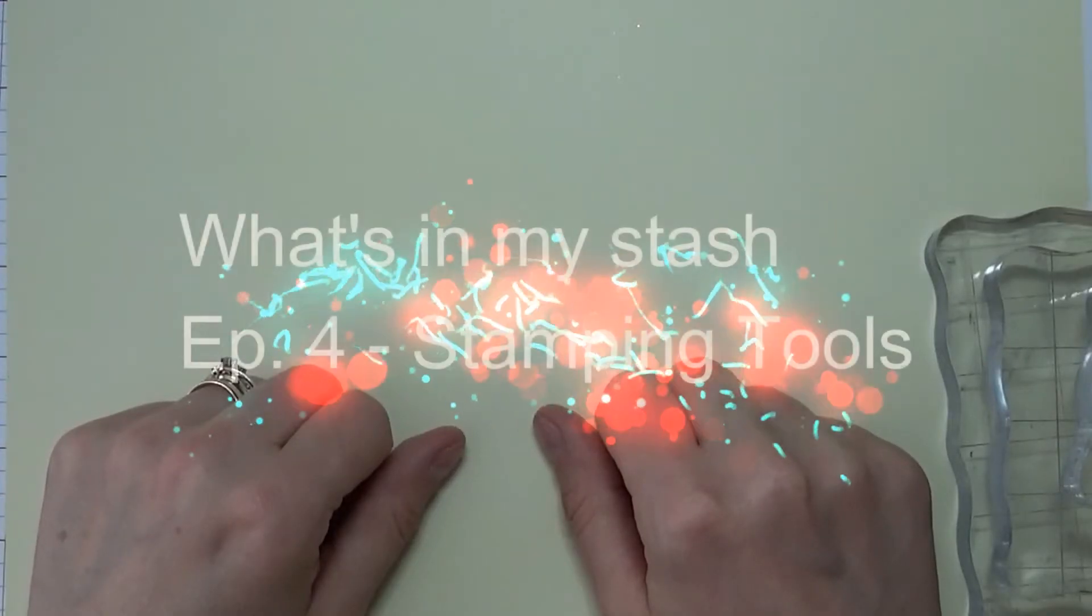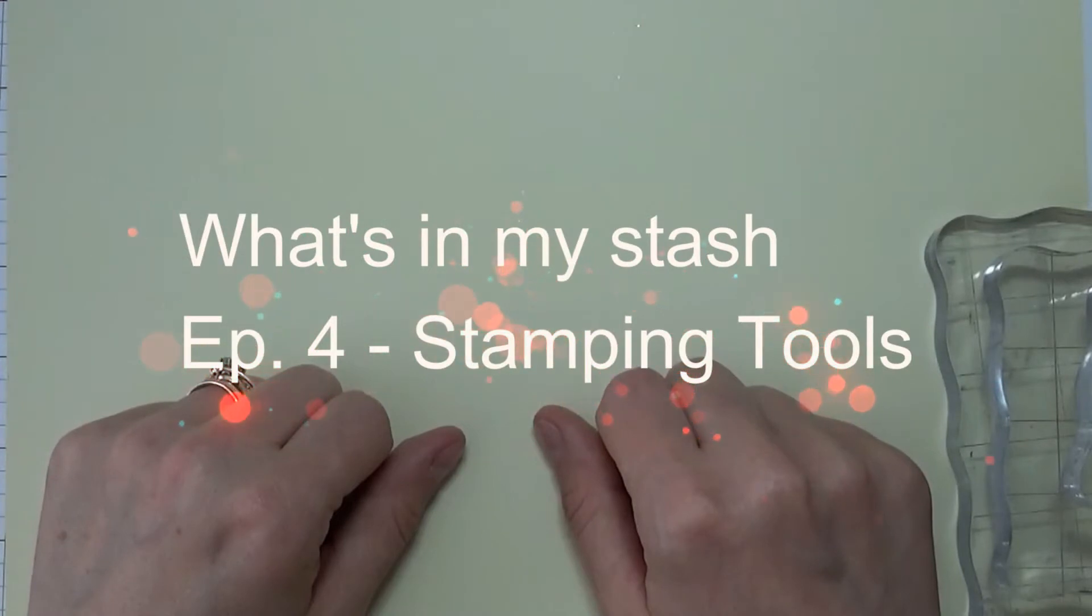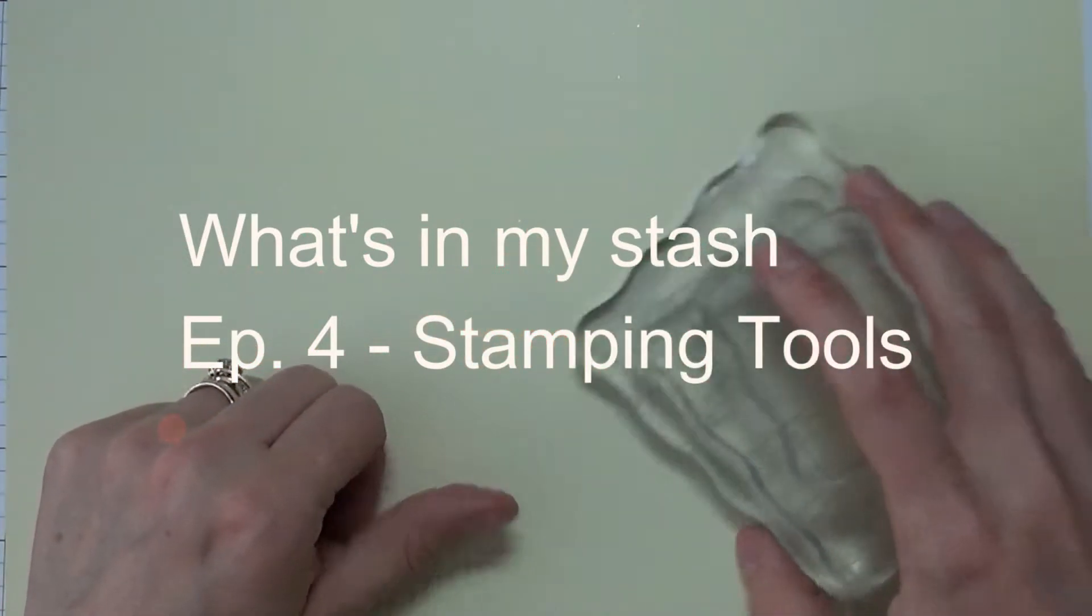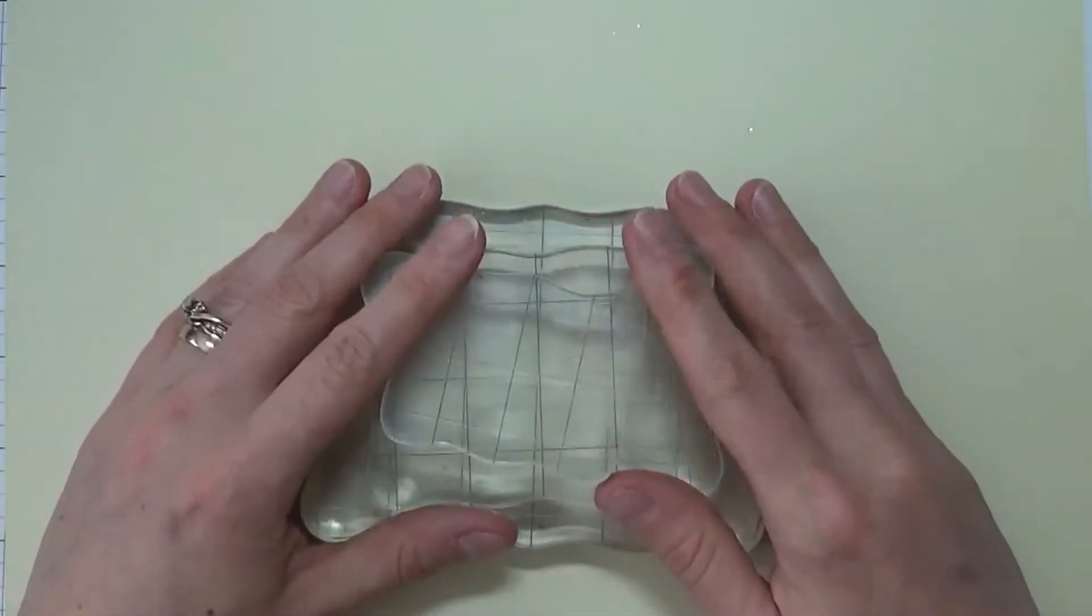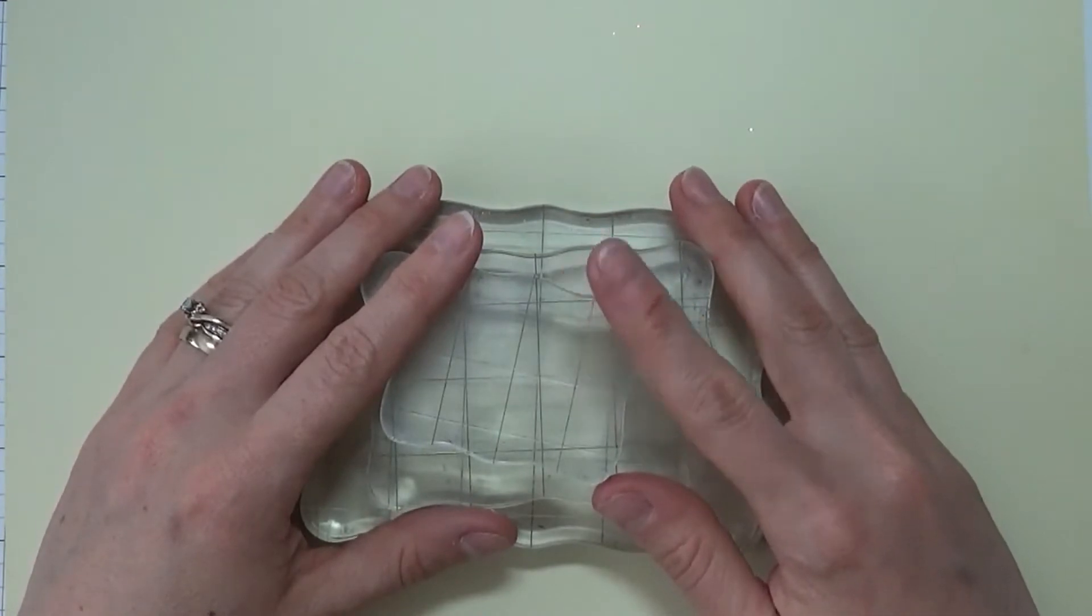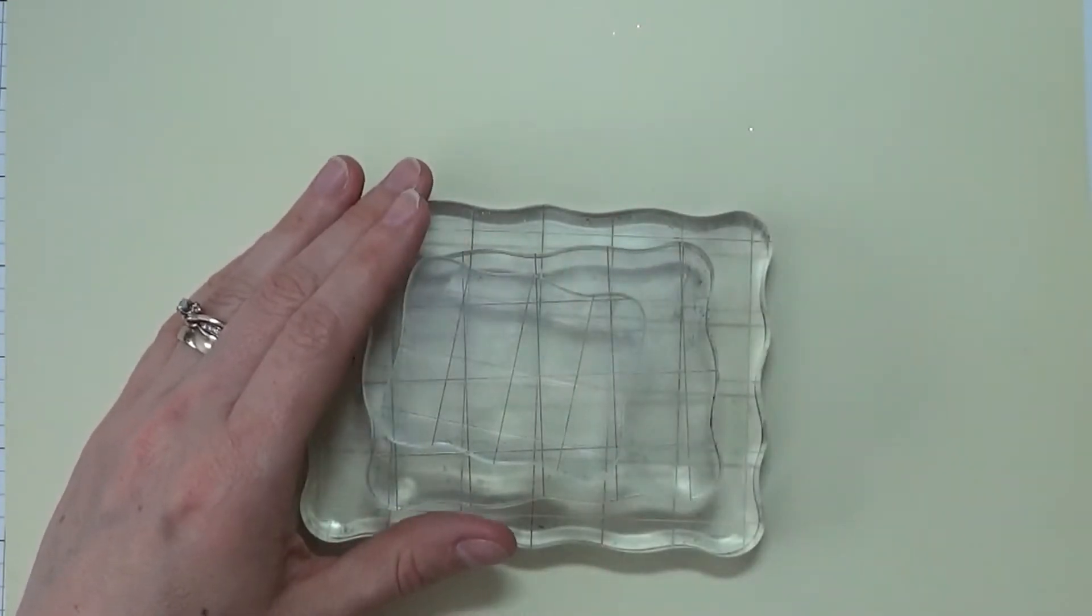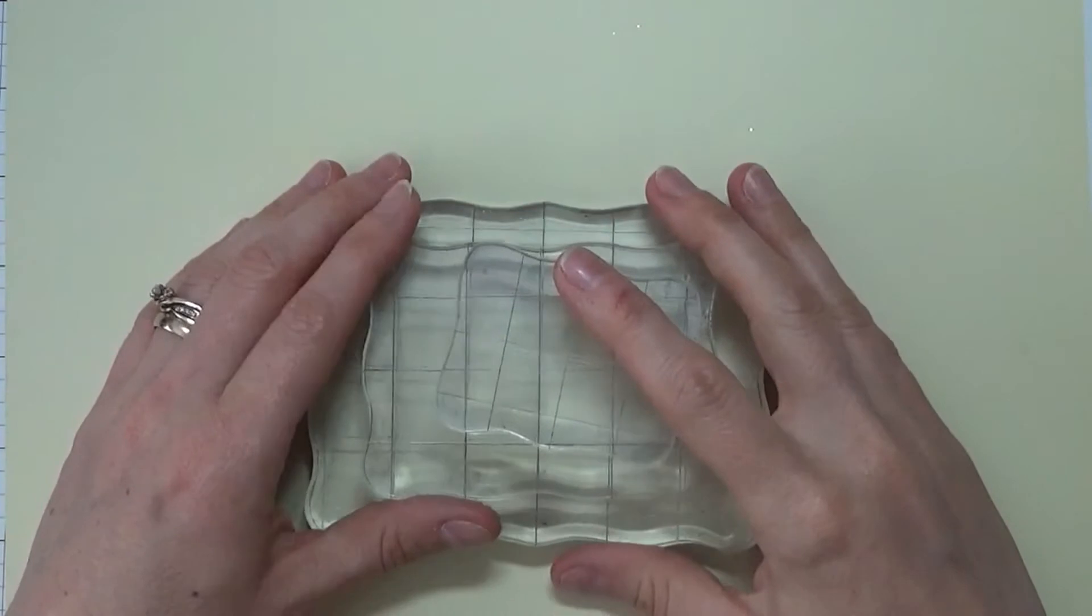Hey there everybody, it's Kelly with kellyscards.ca and welcome to What's in My Stash. For this week we're going to talk about stamping tools. We will discuss inks later, but for now we are going to discuss acrylic blocks, the MISTI, some cleaners, etc.